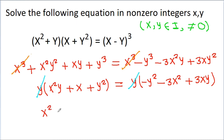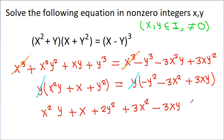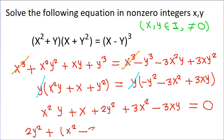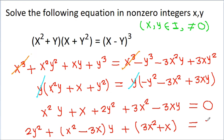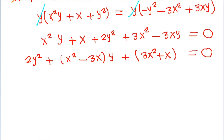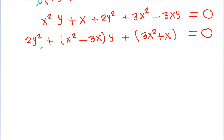After cancelling y, we get x squared y plus x plus y squared, then minus 3x squared minus 3xy equals 0. Collecting terms: 2y squared plus x squared minus 3x times y, plus 3x squared plus x equals 0. This is a quadratic equation in y.